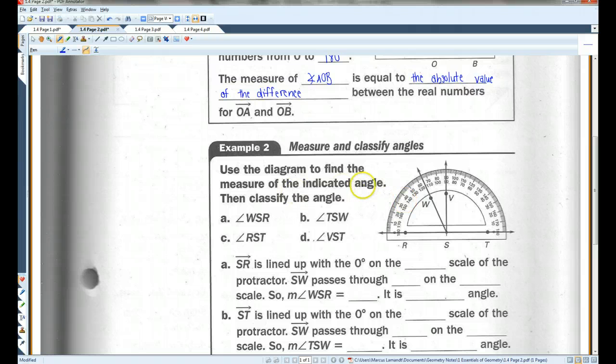Example two. Use the diagram to find the measure of the indicated angle, then classify the angle. Alright. Angle WSR, angle WSR, would be this angle here. SR is lined up with zero on the outer scale of the protractor. SW passes through 65 degrees on the outer scale. We call it the inner scale and outer scale because this scale is on the outside and this scale is on the inside. So the measure, this little m means measure. The measure of angle WSR is 65 degrees. It's between zero and 90 degrees, so it is an acute angle.